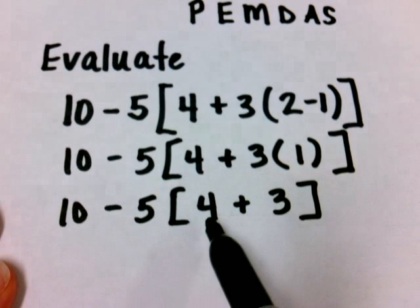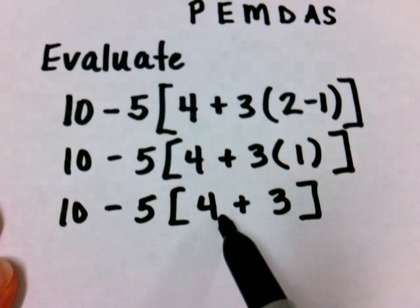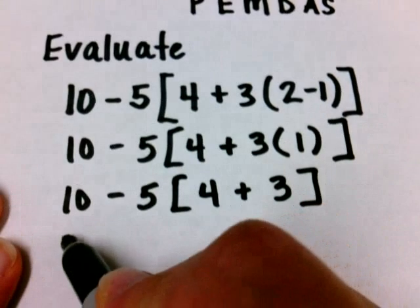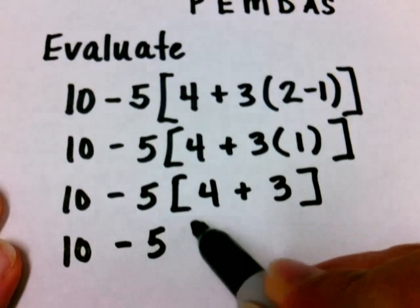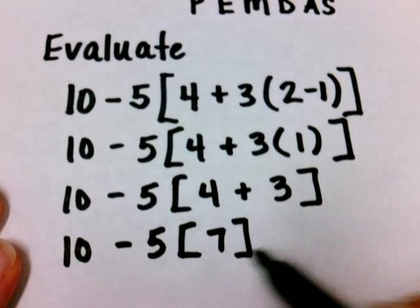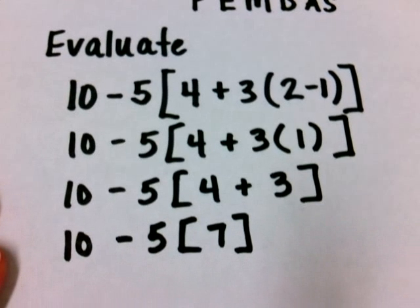Now, still working inside the bracket, we can add here. So 4 plus 3 would give us 7. And I'm finished now with my parentheses step.